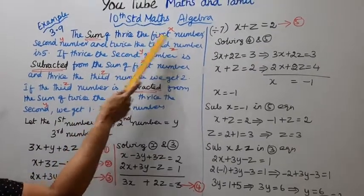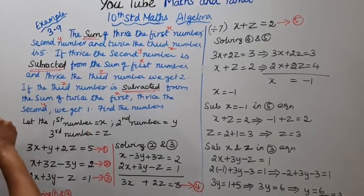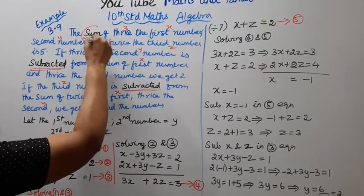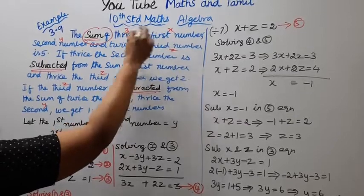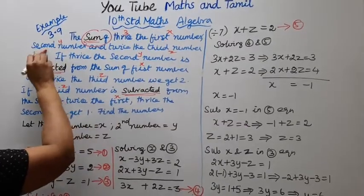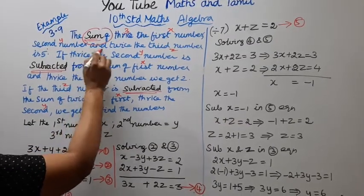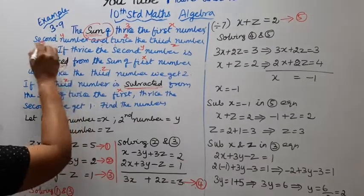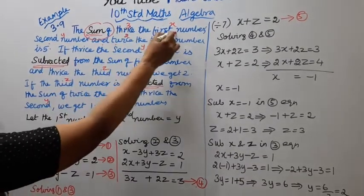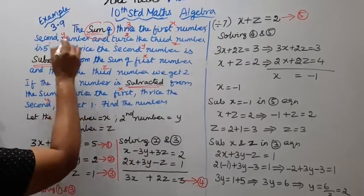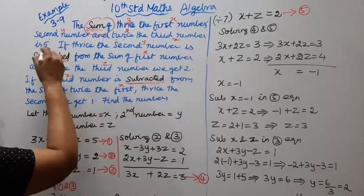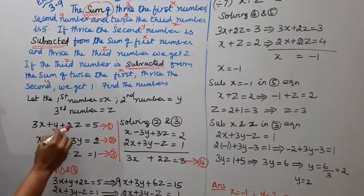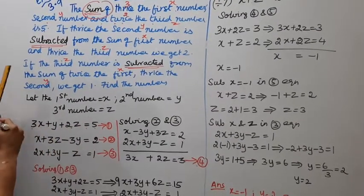Thrice the first number means 3x. The sum of thrice the first number, second number, and twice the third number gives us the first equation: 3x + y + 2z = 5.